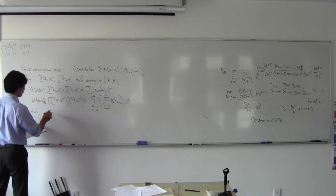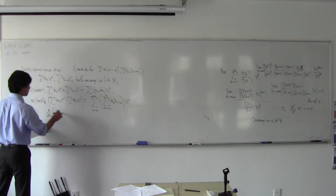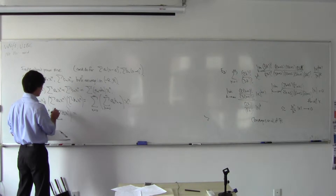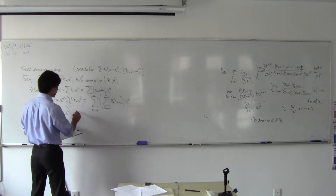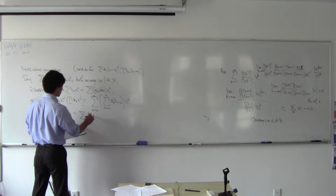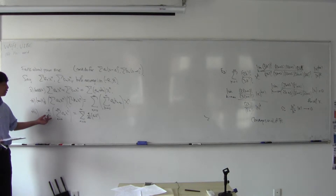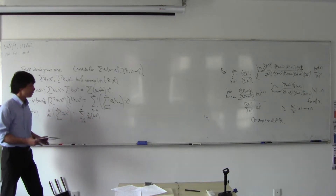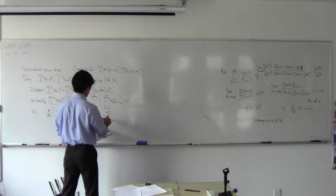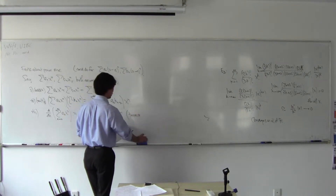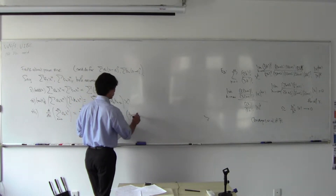Next, if you take the derivative of a power series — summation from n=0 to infinity — it actually turns out to be the sum of the derivatives. The derivative of the infinite sum turns out to be the infinite sum of the derivatives. So you get summation n·a_n x to the n minus 1. This is called term-wise differentiation.